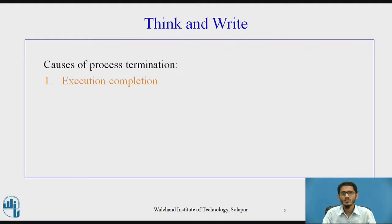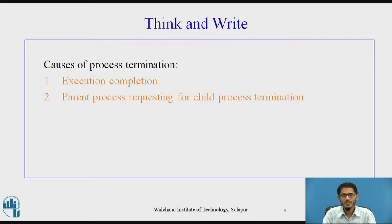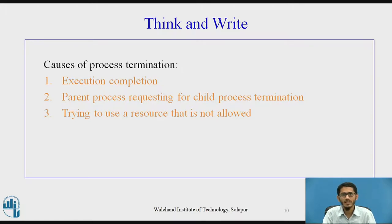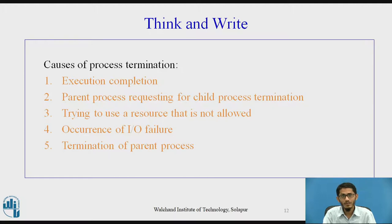Now let us see the causes of process termination. The first cause is execution completion — execution may have been completed. The second cause is the parent process requesting child process termination. The third cause is trying to use a resource that is not allowed. The fourth cause is any IO failure that may have occurred. The fifth cause is the parent process getting terminated. Finally, due to reasons like memory scarcity, the process may get terminated.